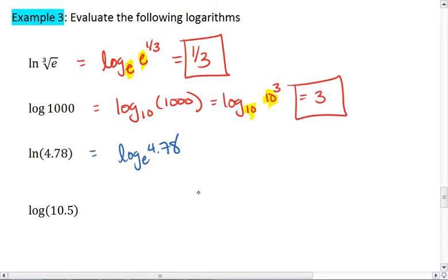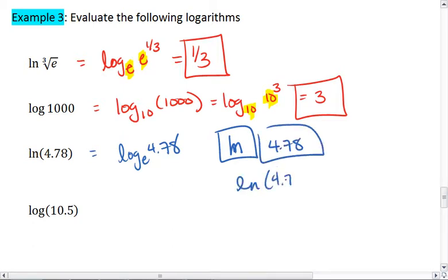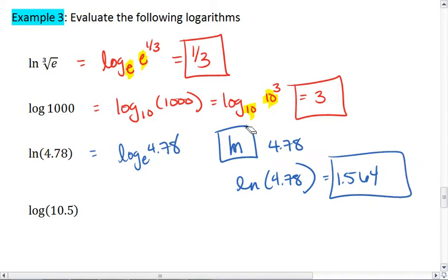So what we do is we just use our calculator. We're going to go to the calculator and plug in Ln. Let's type in that button. And then it will automatically give you parentheses. And then just type in 4.78. We find that Ln of 4.78 is approximately 1.564. So this was a calculator problem.